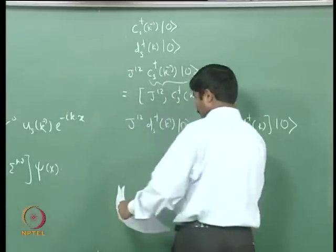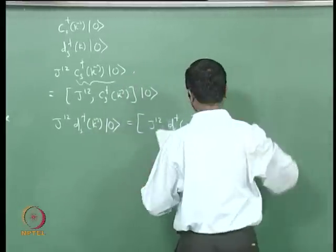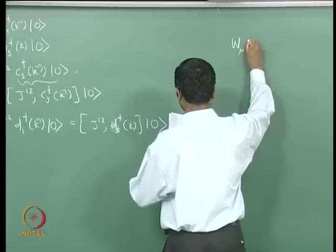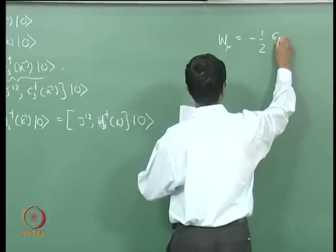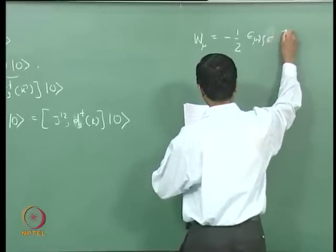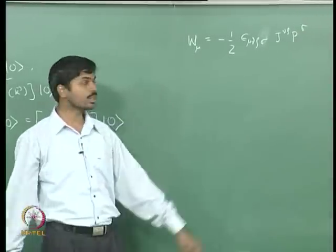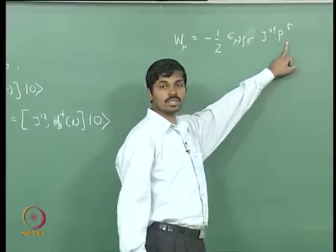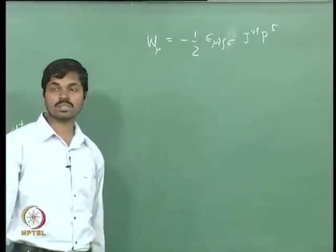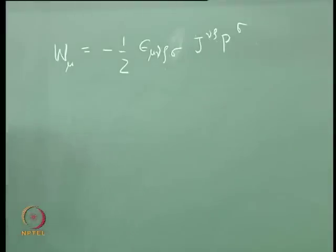To proceed, let us consider what is known as the Pauli-Lubanski operator, defined as w_μ = −(1/2) ε_{μνρσ} J^{νρ} p^σ. Because of the antisymmetrization and the presence of p_σ, this operator projects out the orbital angular momentum part and only retains the spin of any given state.